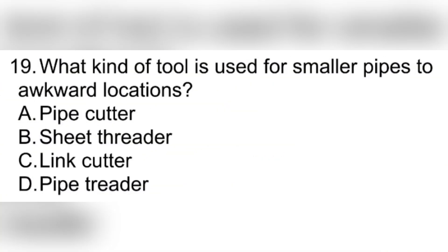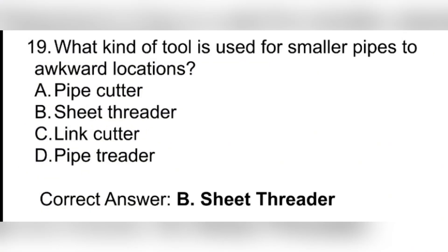Question 19. What kind of tool is used for smaller pipes in awkward locations? A. Pipe cutter. B. Sheetthreader. C. Length cutter. D. Pipe threader. Correct answer: B. Sheetthreader.